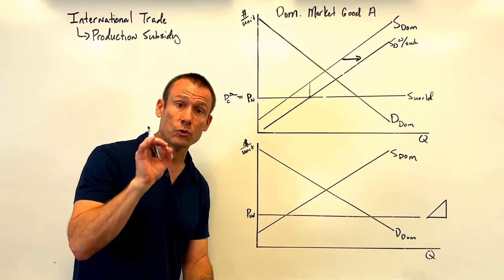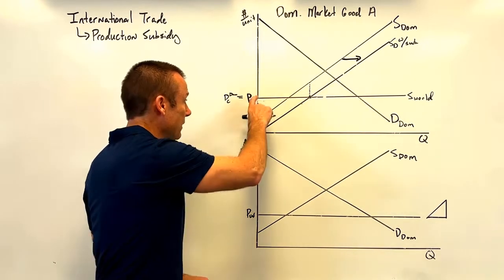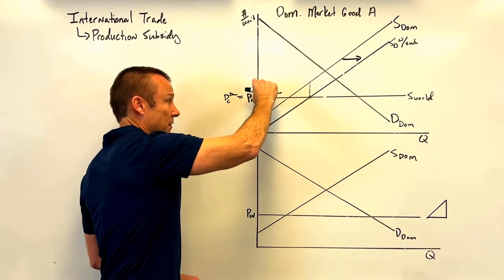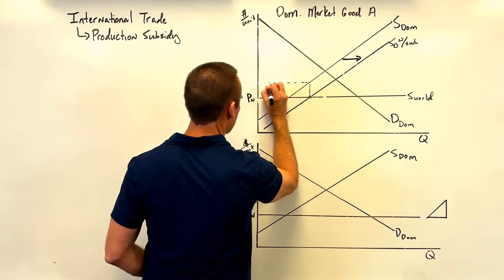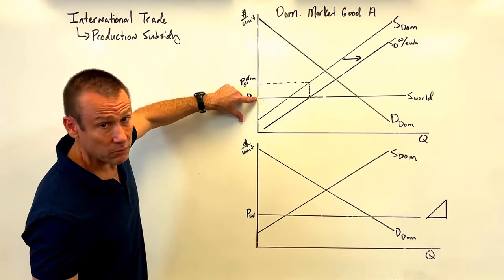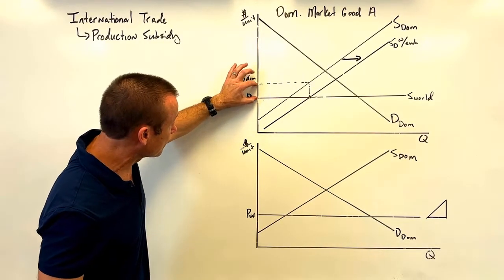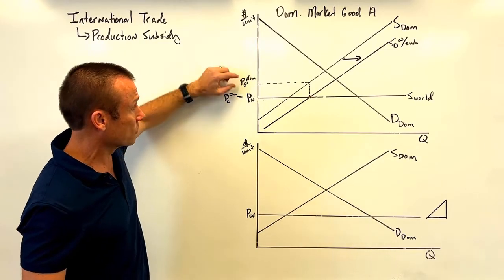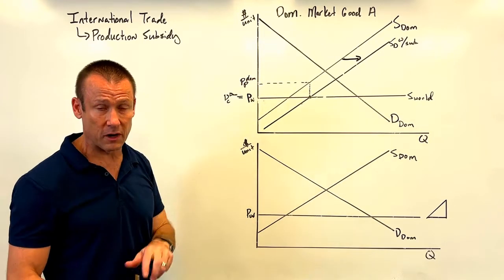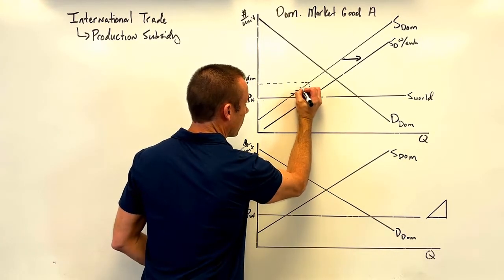The domestic consumer continues to pay price world — that's a big takeaway: production subsidies do not hurt domestic consumers. Their price does not go up. However, the government hands the producer a per unit subsidy on top of that, so the price producer domestic is higher than the price consumer domestic by the amount of the per unit subsidy.